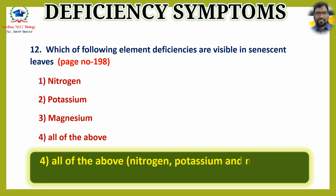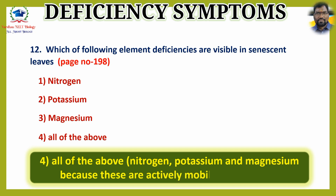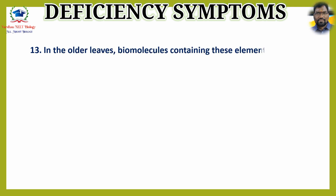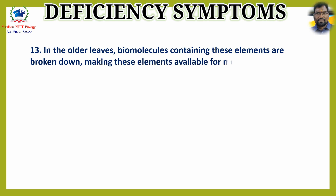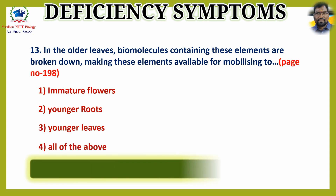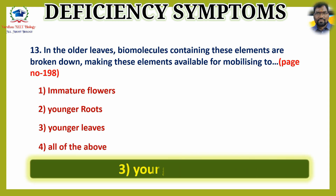Nitrogen, potassium, and magnesium deficiencies are visible in senescent leaves because these are actively mobilized elements. Question 13: In the older leaves, biomolecules containing these elements are broken down, making these elements available for mobilizing to — options are 1) immature flowers, 2) younger roots, 3) younger leaves, 4) all of the above. The answer is option 3: younger leaves.